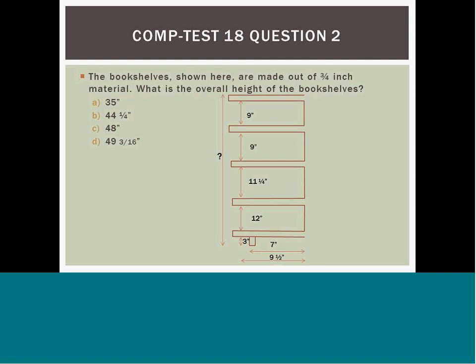Question 18: A bookshelf is made out of ¾-inch material. Given the dimensions, what is the height of the bookshelf? A) 35 inches, B) 4¼ inches, C) 2 inches, or D) 9 and 3/16 inches. The height includes the material thickness five times. Taking ¾ inch multiplied by 5 equals 3¾ inches. Adding the shelf heights — one quarter inch and 12 inches — and the three-inch height gives a total of 40 inches. Width and width measurements are ignored because they do not pertain to the height question.